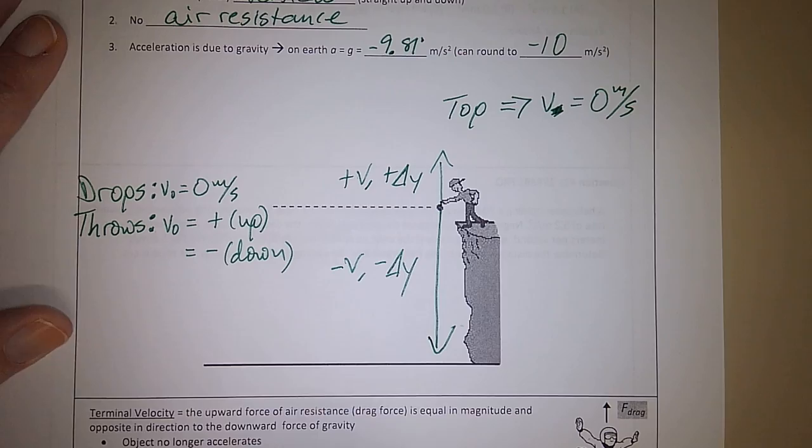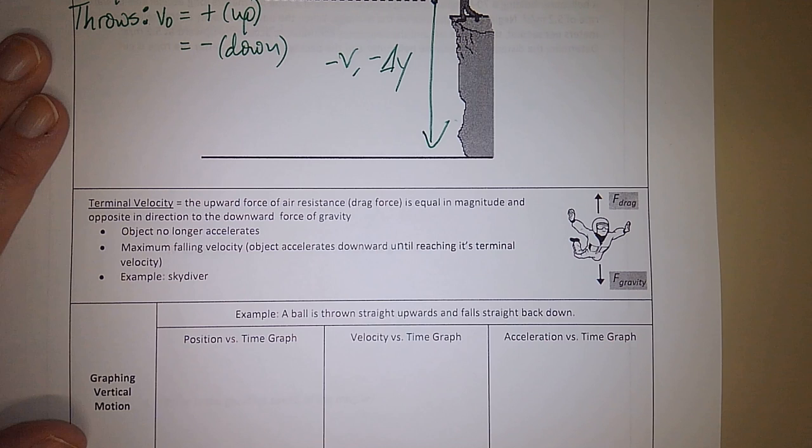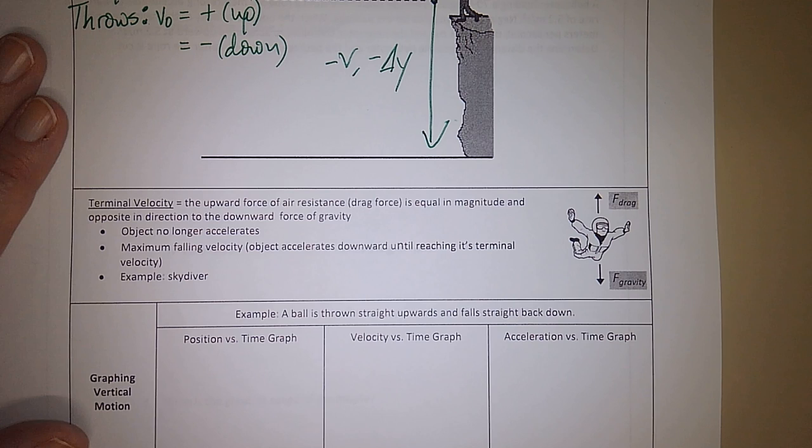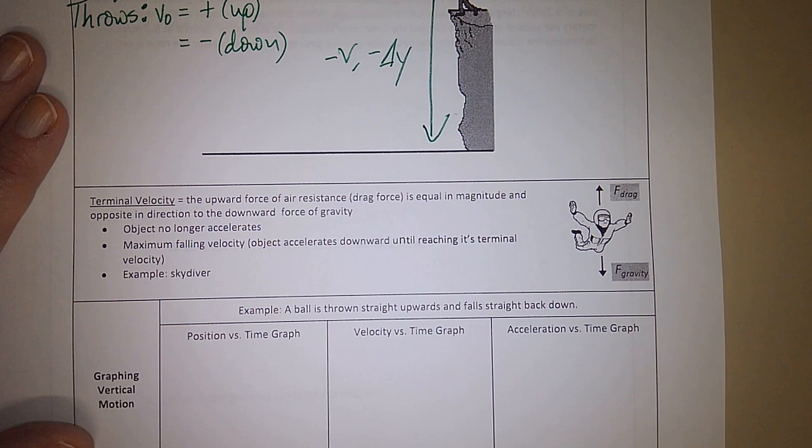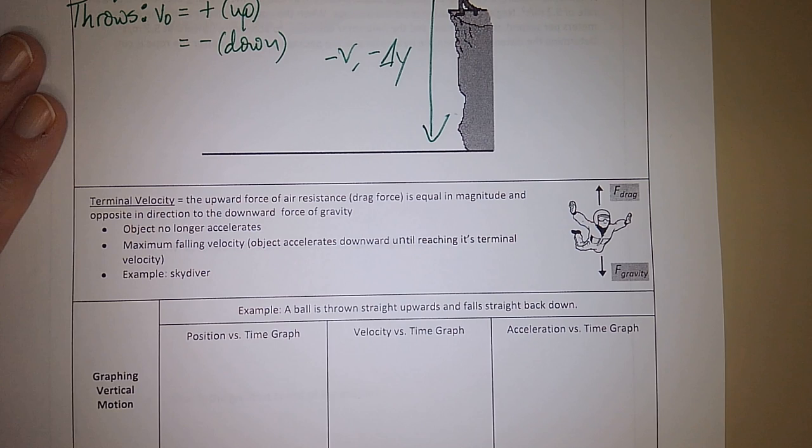And then terminal velocity, it's kind of easy. It's constant velocity. So when the force of air upward is equal and opposite to the force of gravity on your body, you don't stop moving, but you move at constant velocity. So it would feel like you're not moving.